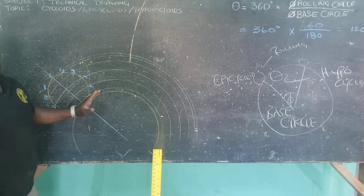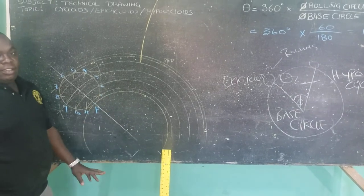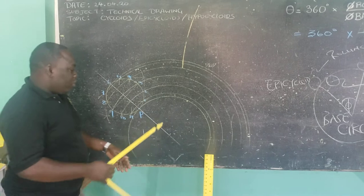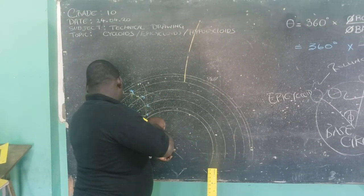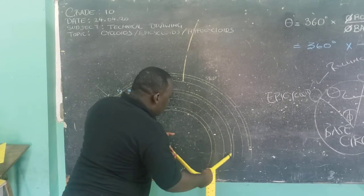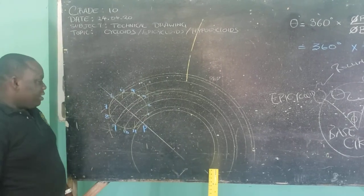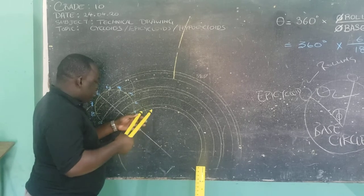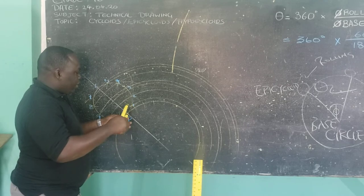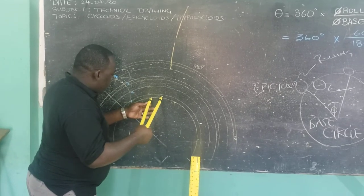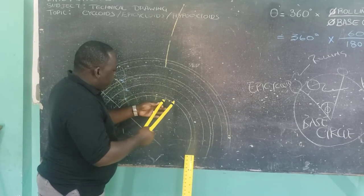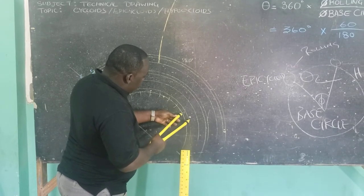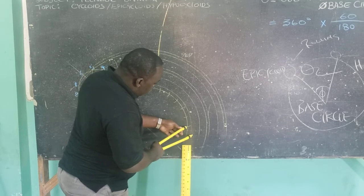...is that the track for the cycloid is straight, while the track for the epicycloid is circular and it is rolled on the outside of that circular track. As a result, the center of the rolling circle will have its own unique line. We take off the divisions — 1, 2, 3, 4, 5, 6, 7, 8, 9, 10, 11 — along that center line.